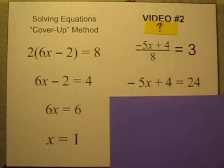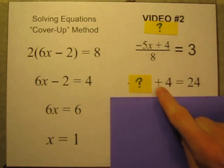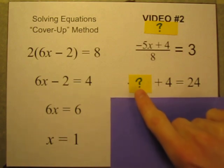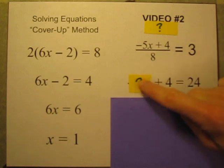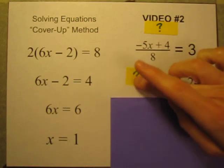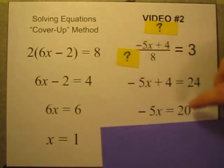I can do it again. Let's cover up this chunk that has the x in it. What plus four equals twenty-four? That's easy. I know that twenty plus four equals twenty-four. So whatever is under here must be twenty. So negative five times x equals twenty.